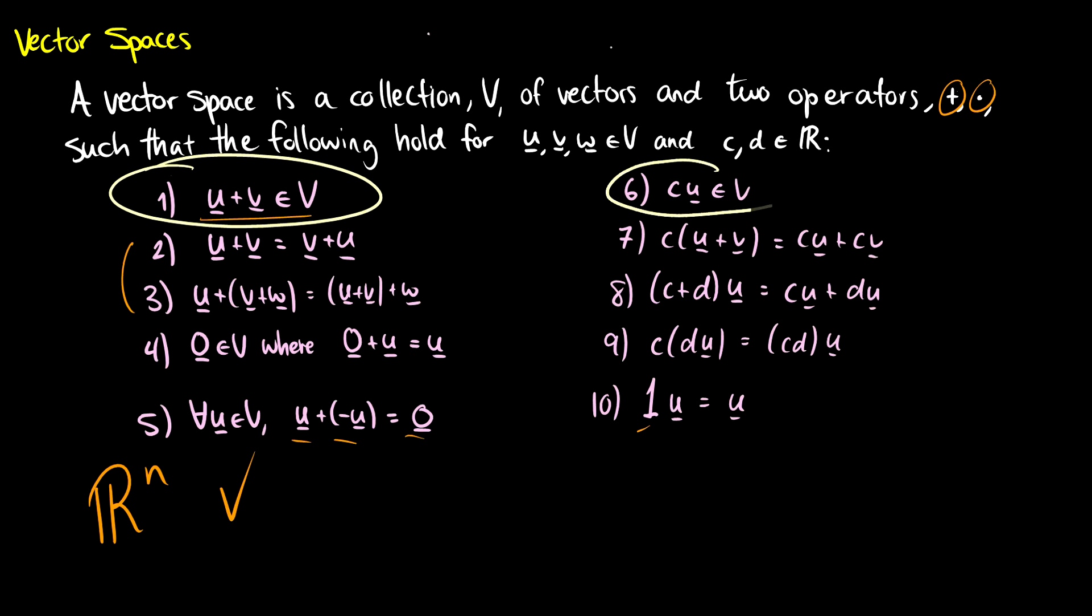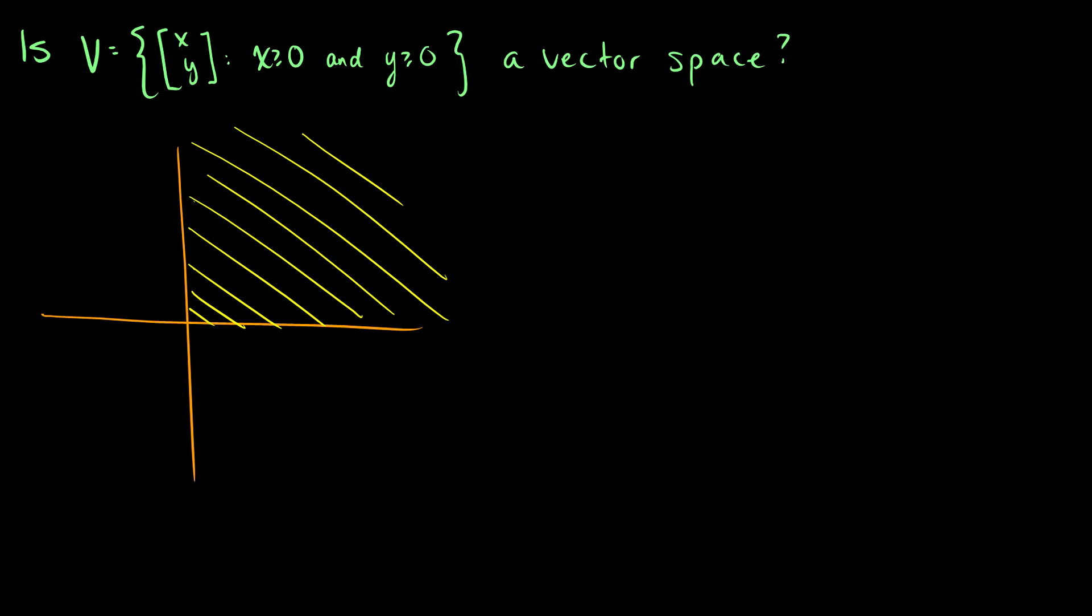So u plus v needs to be in there. And if we multiply by a scalar, it also needs to be in our vector space. And this scalar can be any number in the reals, positive or negative. So let's think about this.